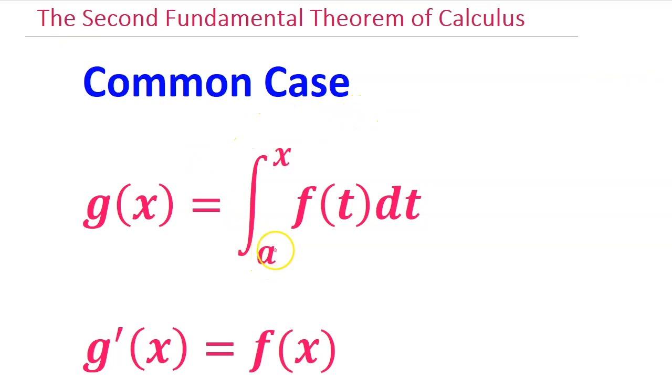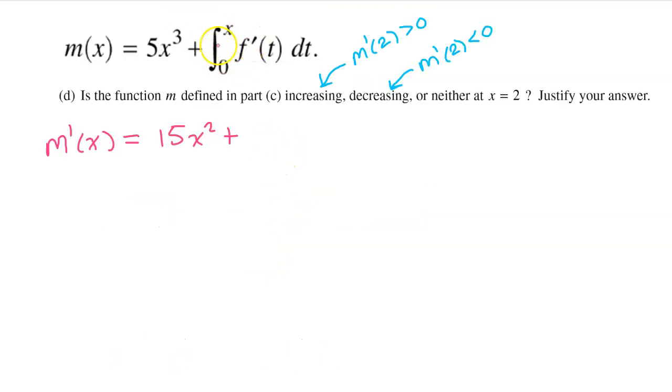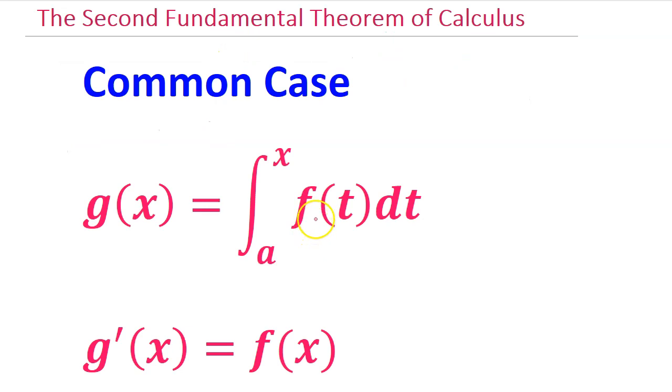We can use the common case when the lower limit of integration is just a number and the upper limit is just x. This integral defined function does fit the common case, so this is going to be super easy. The derivative of a common case integral defined function is simply the integrand, except you replace the dummy variable with the real variable, so f of t simply becomes f of x.